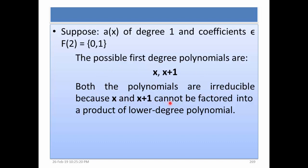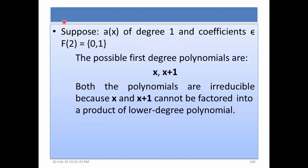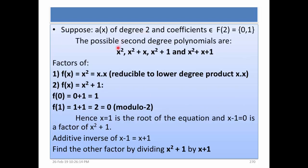Suppose A(x) has degree 2 and coefficients from the Galois field GF2, which contains 0 and 1. The possible second degree polynomials are: x^2, x^2 plus x, x^2 plus 1, and x^2 plus x plus 1. Here the finite field of coefficients is the same — 0 and 1 — but the polynomial degree is 2. So the number of possible polynomials has increased.